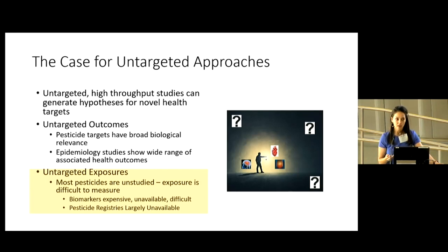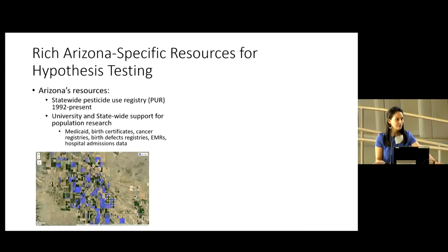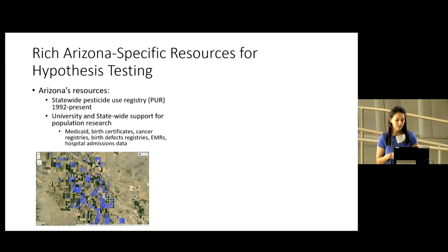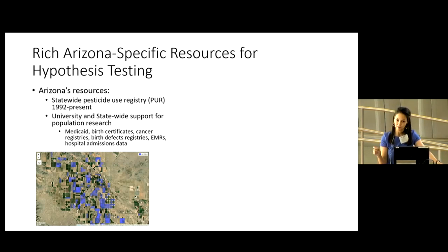However, we can use pesticide registries, which record all pesticide applications that have occurred in a given area. These are largely unavailable across the world and across the United States, with the exception of California and the great state of Arizona. Arizona has wonderful resources that make untargeted pesticide studies feasible. One resource is the Statewide Pesticide Use Registry, which goes back to 1992 and provides a record of every commercial application of agricultural pesticides. We also have university and statewide support for health outcomes research, with access to data from Medicaid, birth certificates, cancer registries, birth defects registries, EMRs, and hospital admissions data — which is really unique to the state of Arizona.